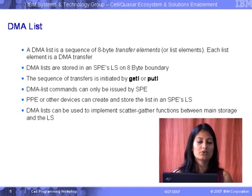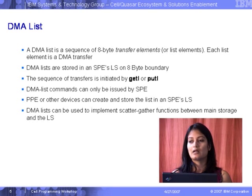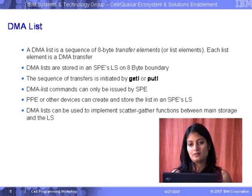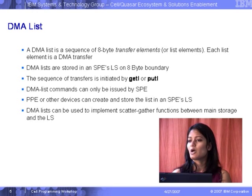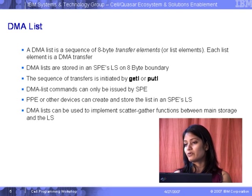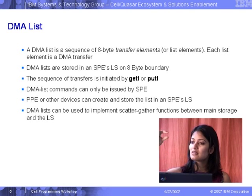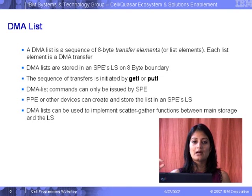Each transfer can be up to 16 kilobytes — that's the maximum size of DMA transfers between a PPU and SPU. So every list element will specify 16 kilobytes, and there will be 2,048 such list elements. On the whole, a total of 32 megabytes of data can be transferred from main memory to the local store. It's a streaming model because the local store is only 256 kilobytes, but via the DMA list it can access as much as 32 megabytes asynchronously in the background.